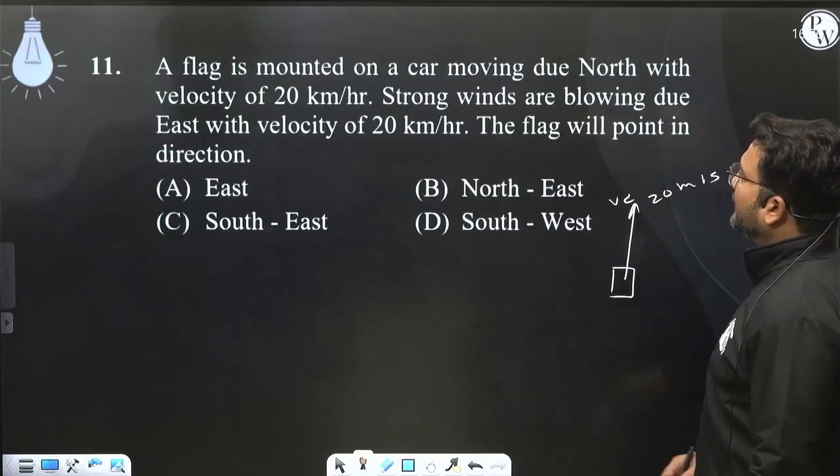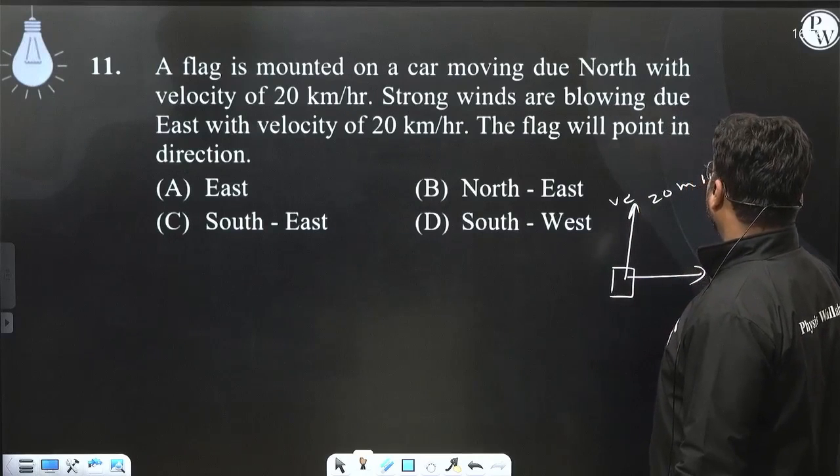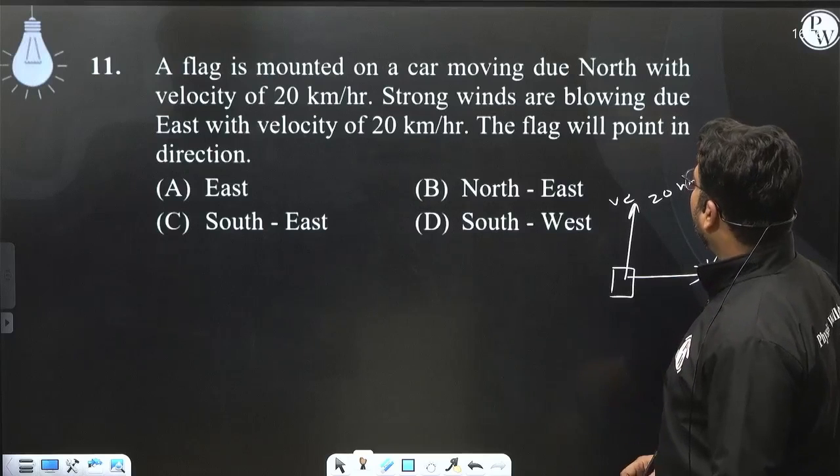Strong winds are blowing due east with a velocity of 20 kilometers per hour. So this is the wind velocity. The flag will point in which direction?